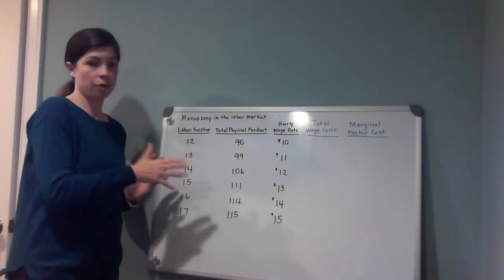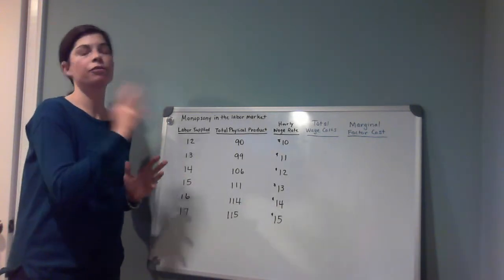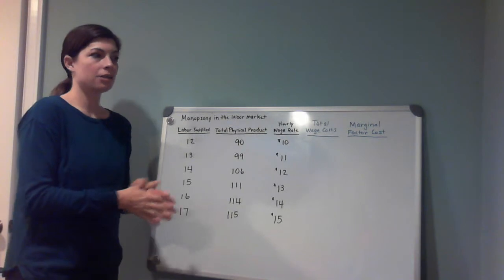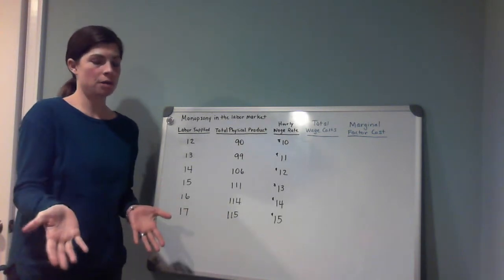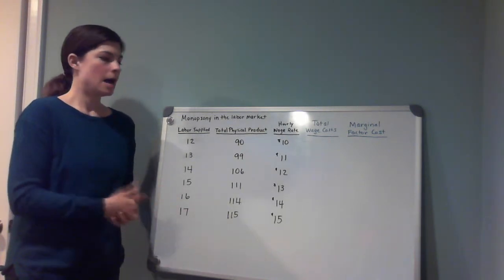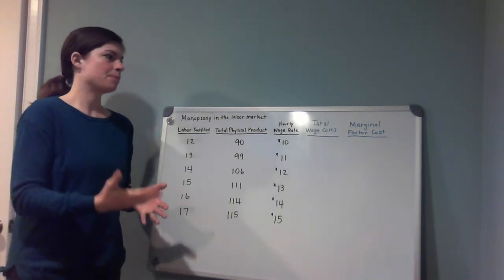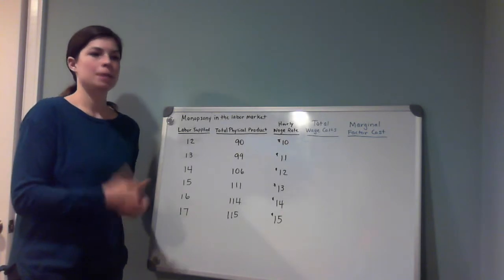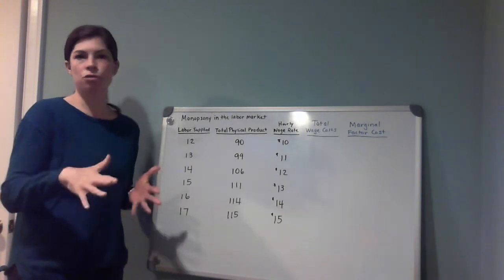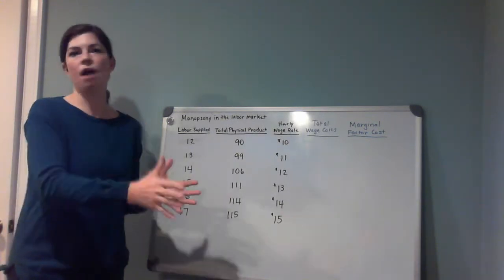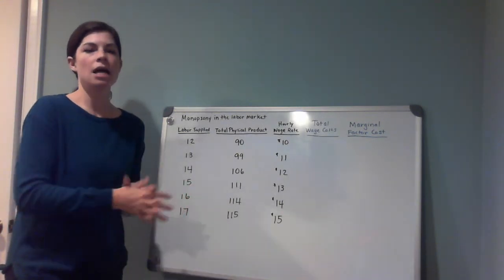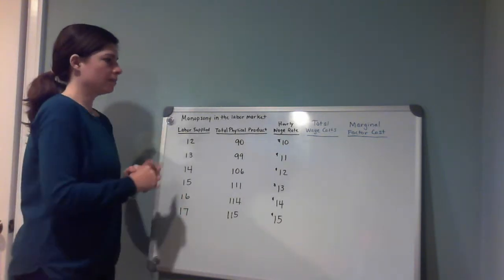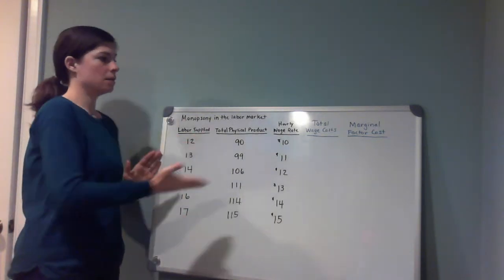This means the firm is the only firm buying labor in this particular market. It's not very common, but an example might be in a small town — let's say a small town in Costa Rica where the only thing going on is a coffee plantation. Those are the only jobs to be had, so you might have a monopsony there.